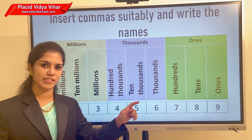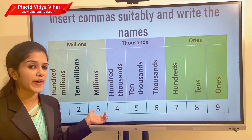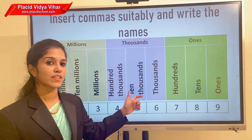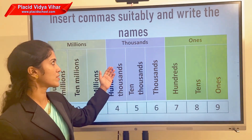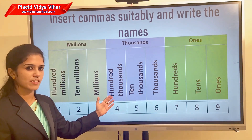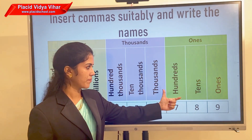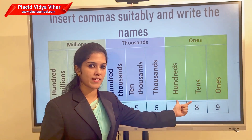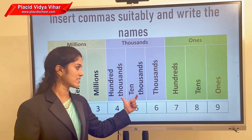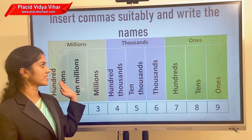Can you write the number name for 123456789 — all digits from one to nine, a nine-digit number? We will place a comma after the thousands period and the millions period. That is, we place one comma just before the last three digits, then before the next three digits.